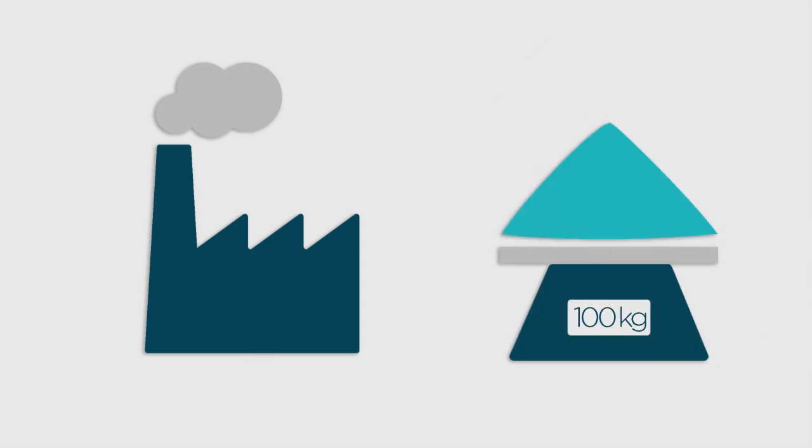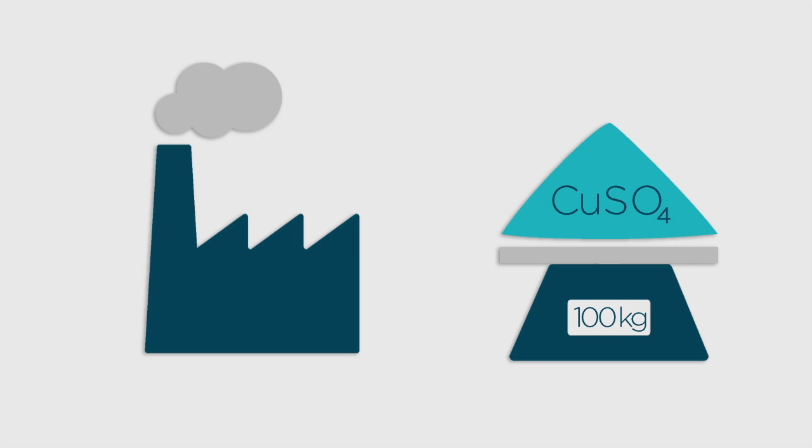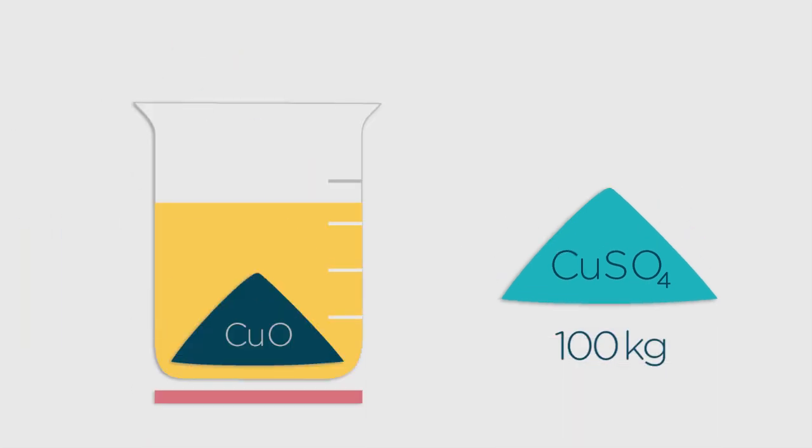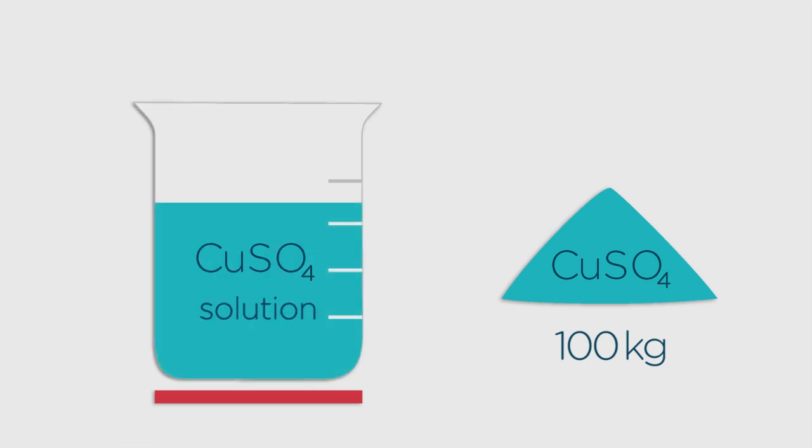One of your customers has ordered 100 kilograms of copper sulfate crystals. To deliver this, you need to dissolve copper oxide in hot sulfuric acid. This will produce copper sulfate solution from which we can get the blue hydrated copper sulfate crystals that you might be familiar with.